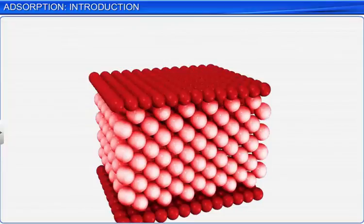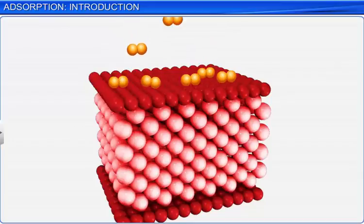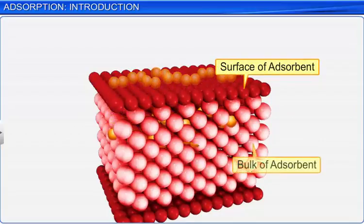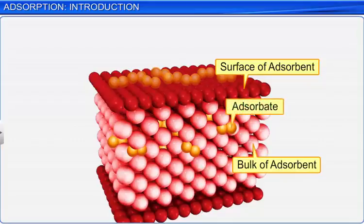Sometimes, adsorption may be followed by the dissolution of the adsorbate in the adsorbent. This means that first, the material appears on the surface of the adsorbent and then passes into its bulk. When the two processes occur simultaneously, it is known as sorption.